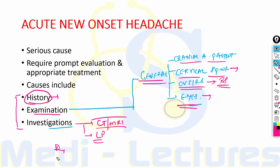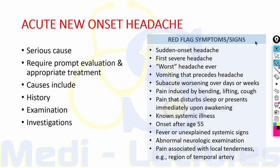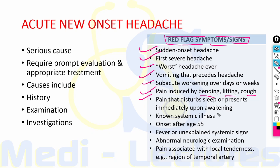The treatment of headache is mainly to treat the underlying cause. Secondary headache usually presents with red flag symptoms, and if these are present they mark secondary headache. Red flag symptoms include: sudden onset headache, first severe or worst headache ever, vomiting preceding headache, subacute worsening over days or weeks, pain induced by bending/lifting/coughing, pain that disturbs sleep or presents immediately upon awakening, known systemic illness, onset after age 55, fever or unexplained systemic signs, abnormal neurological examination, or pain with local tenderness like temporal arteritis. These guide the approach toward secondary causes.